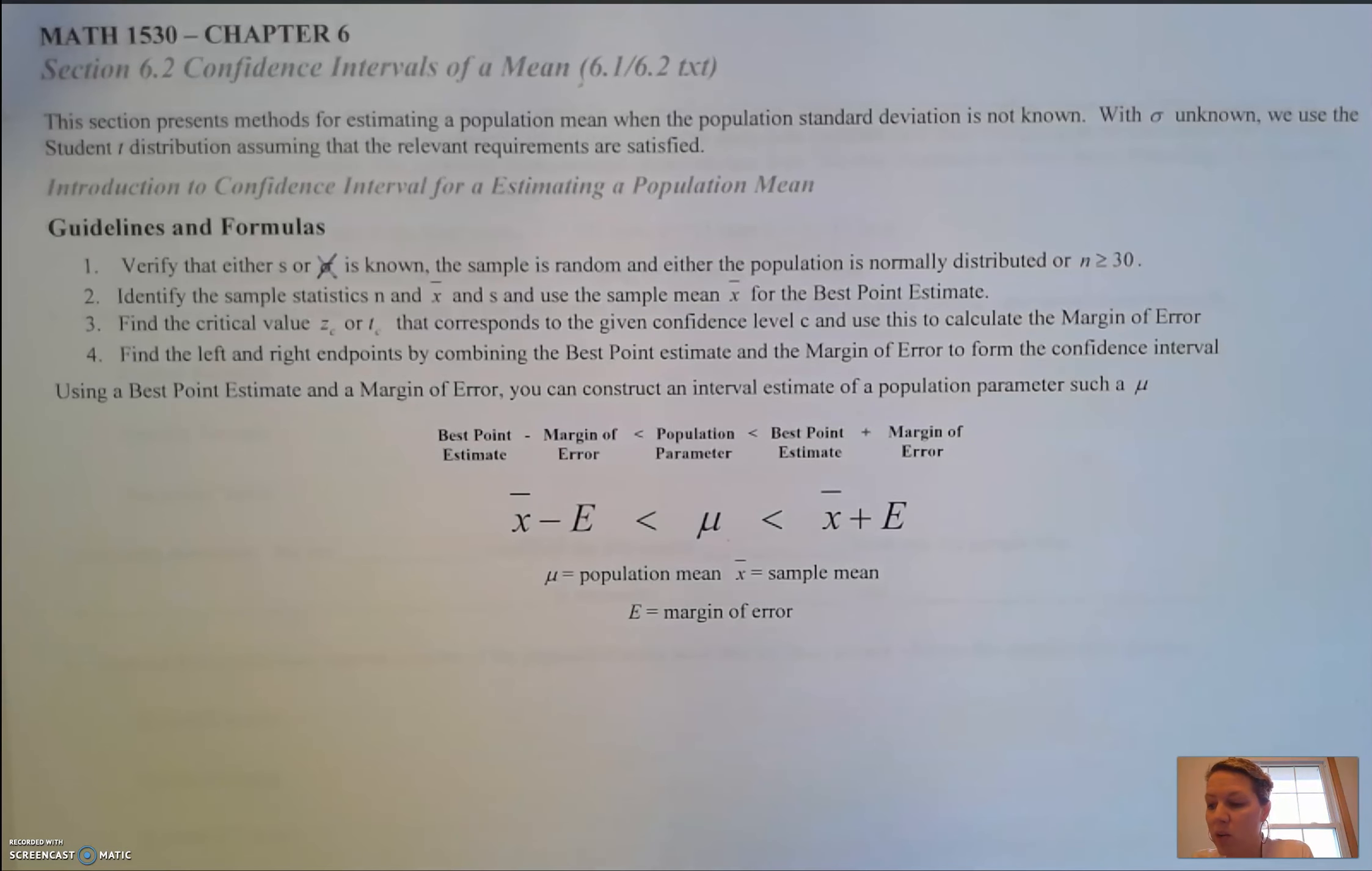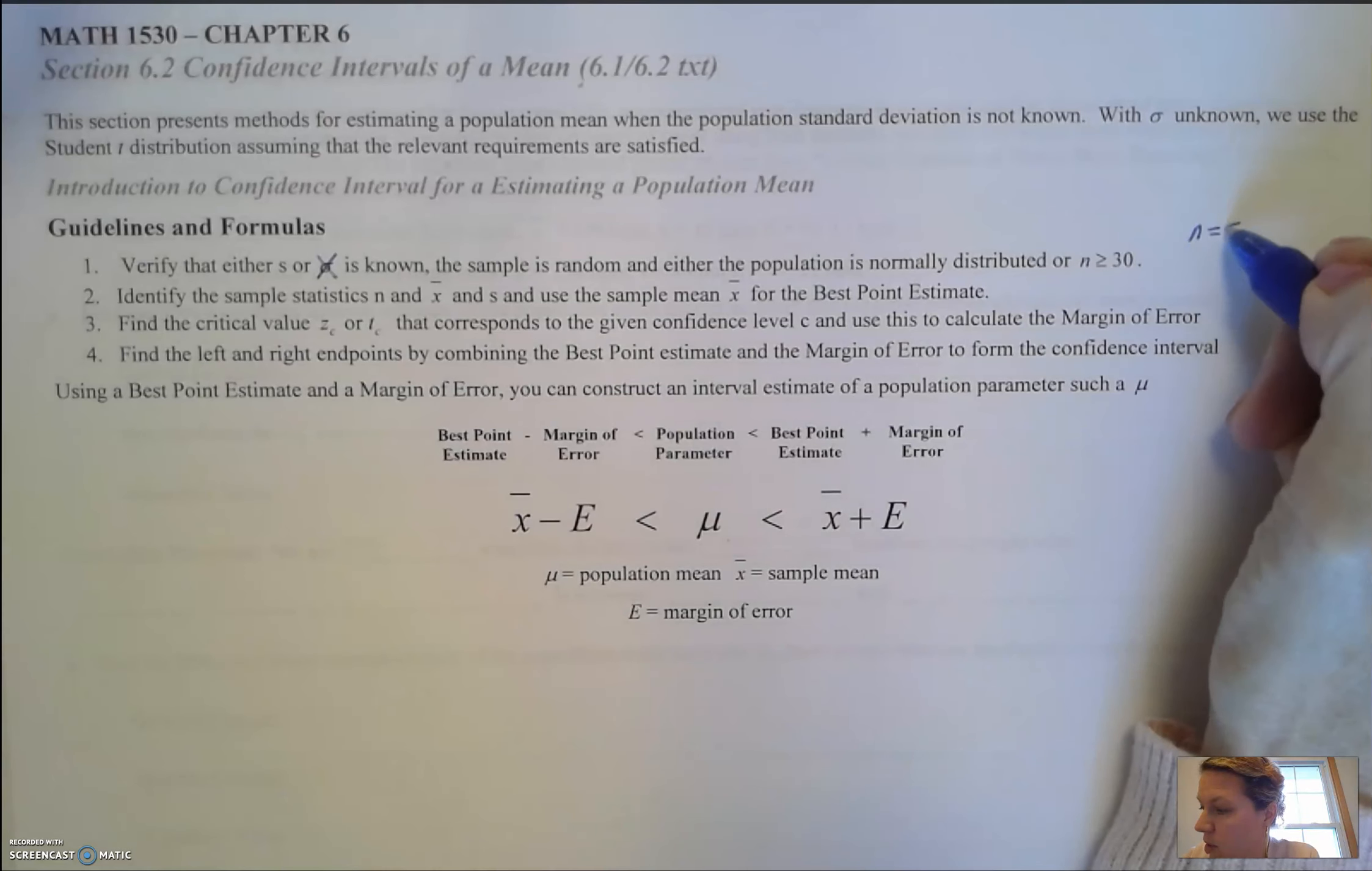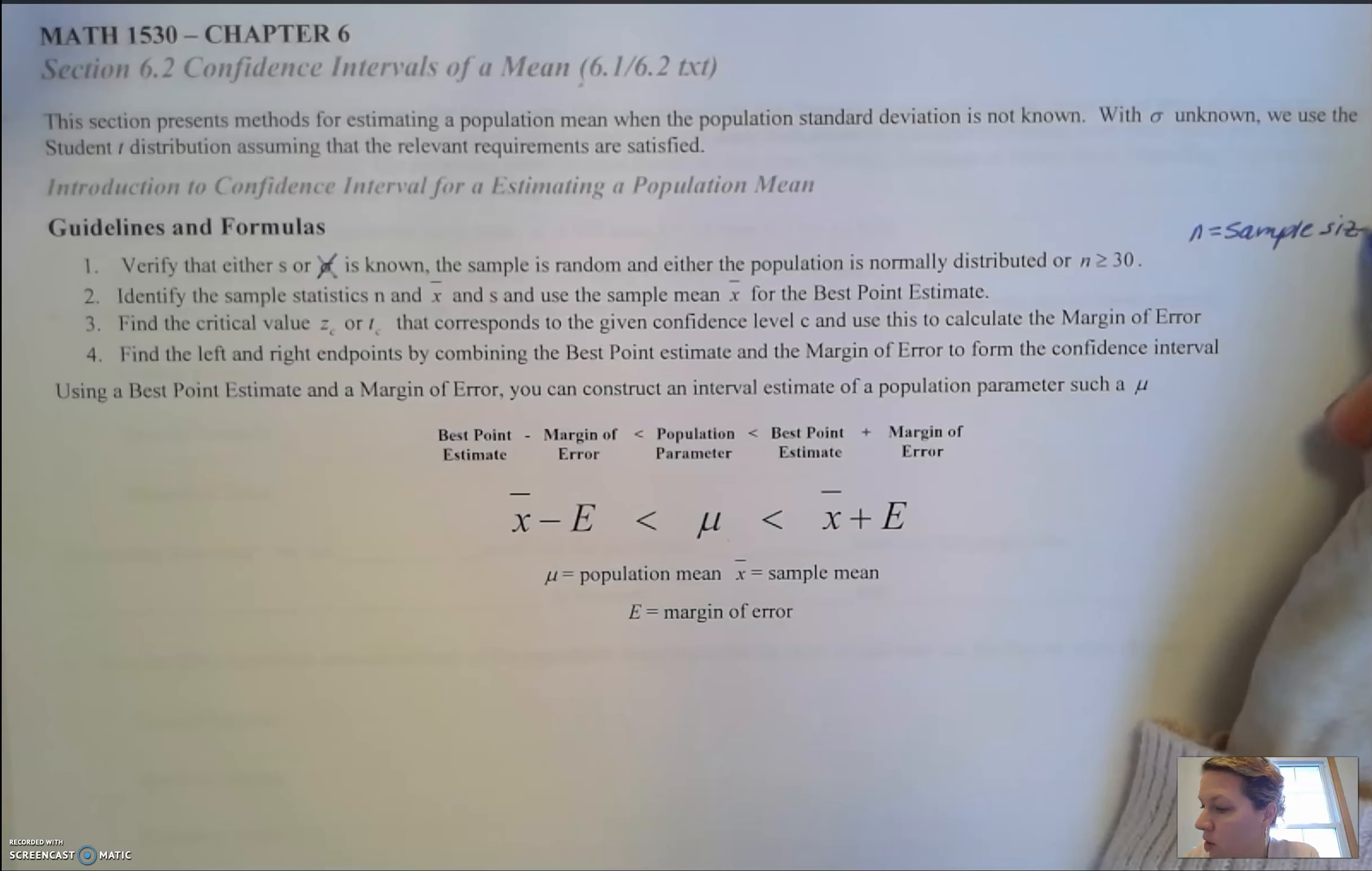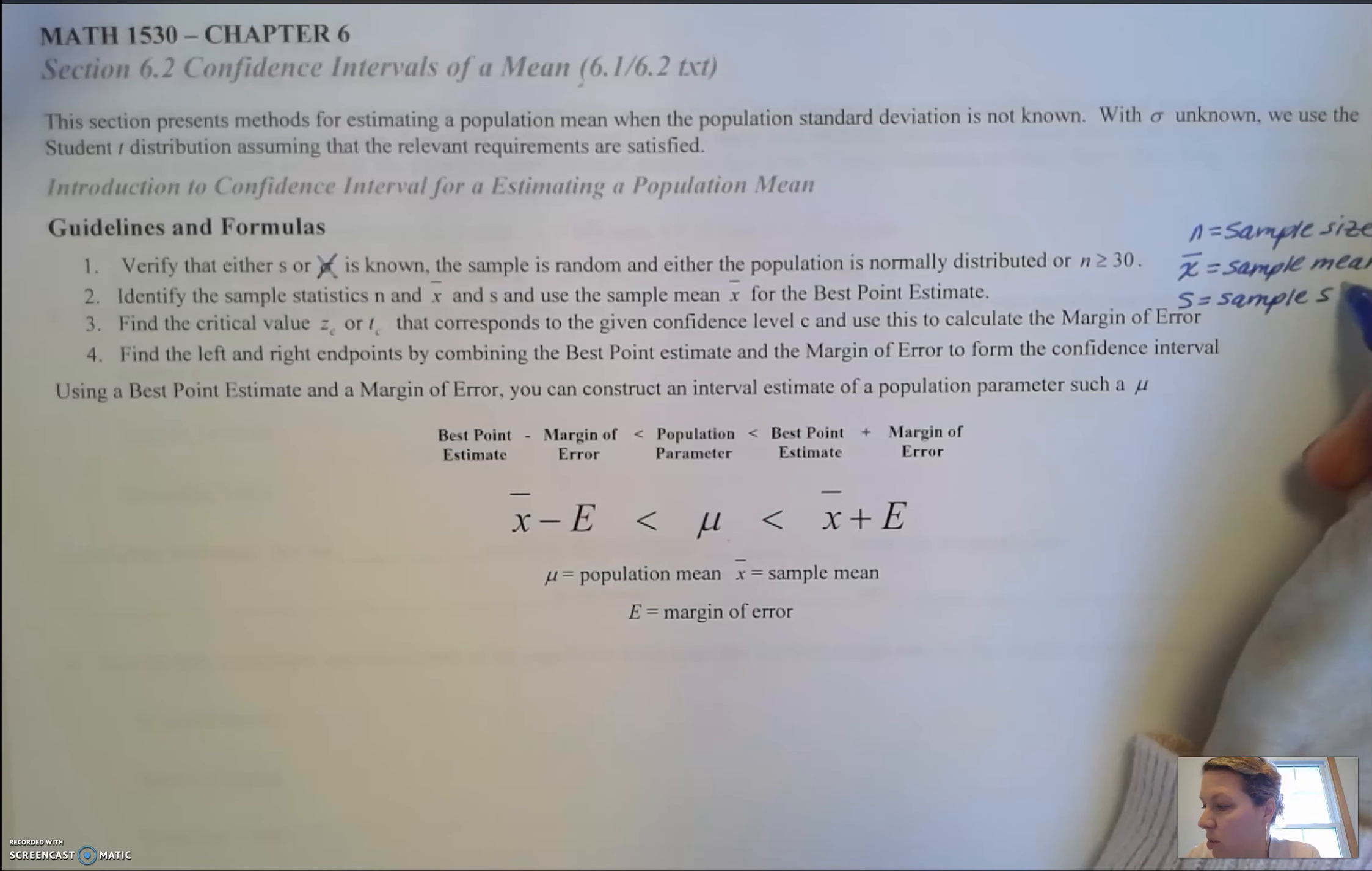Next we're going to identify the sample statistics. n is the sample size, x-bar is the sample mean—like our mean age of students—and s is the sample standard deviation. We can figure out the sample standard deviation of a classroom of students as well.